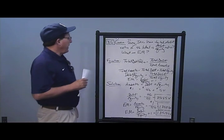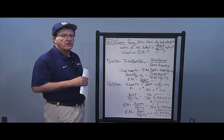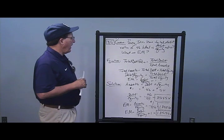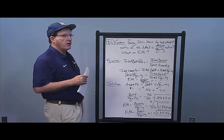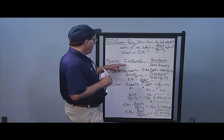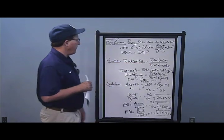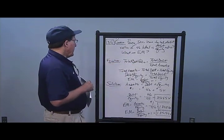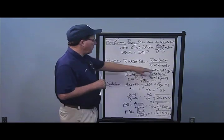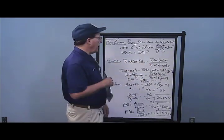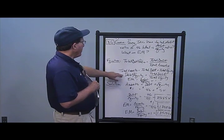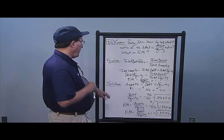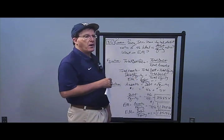In Problem 5, Perry Inc. has a total debt ratio of 0.46 — that's all we're given. They want to know the debt-to-equity ratio and equity multiplier. The total debt ratio is total debt over total assets. Since total assets equal total debt plus total equity per the balance sheet equation, if I'm not given a variable I must calculate it. I need to calculate total equity, and the equity multiplier is debt over equity plus one.